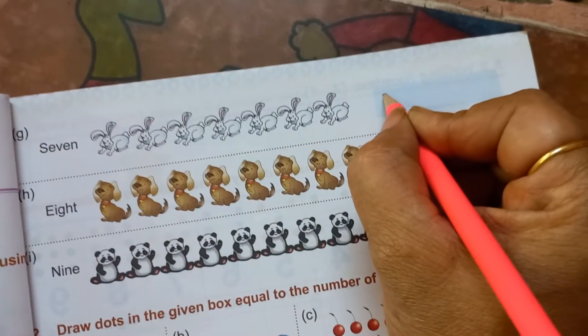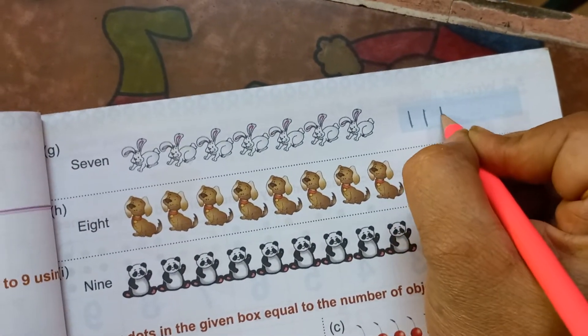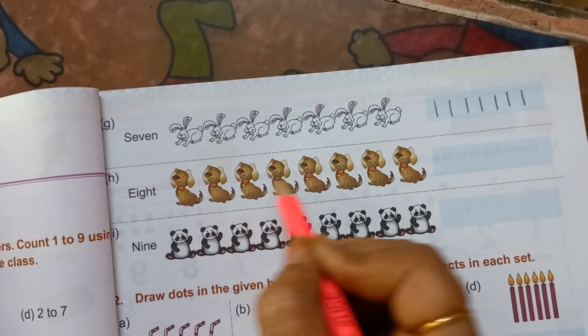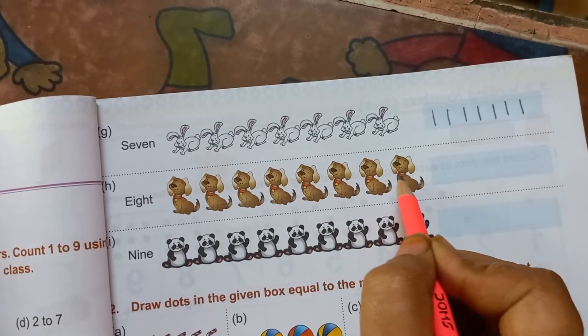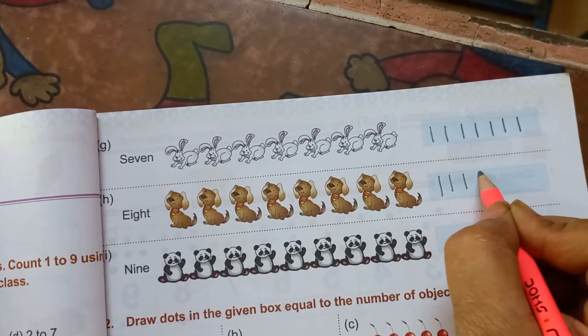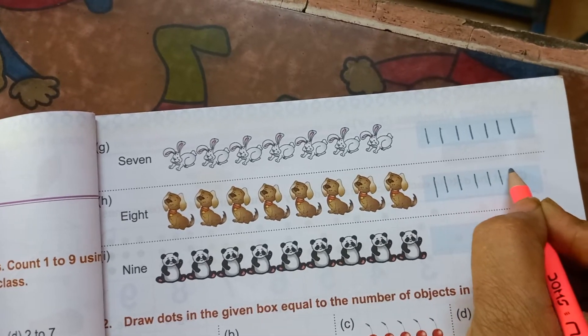Here 7. So 1, 2, 3, 4, 5, 6 and 7. One, 2, 3, 4, 5, 6, 7, 8. So you have to draw 8 lines. One, 2, 3, 4, 5, 6, 7, 8.